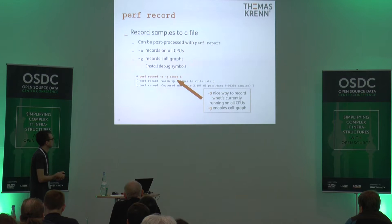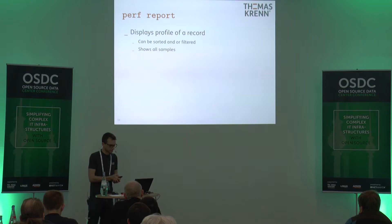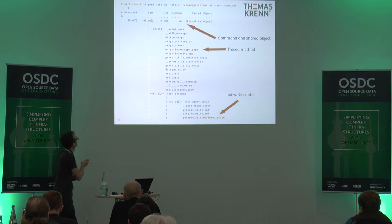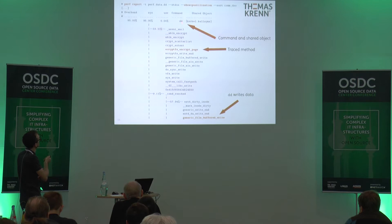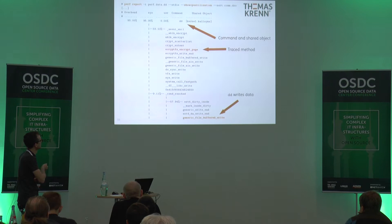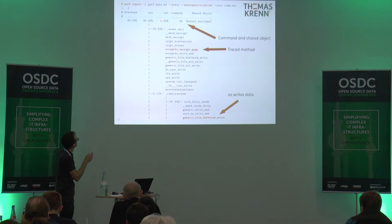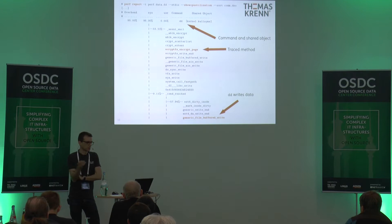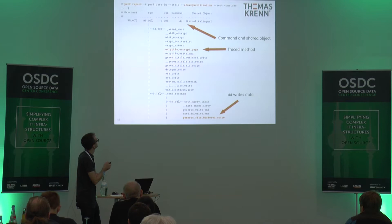You can also record samples to a file — the advantage being that you can analyze the data later on and report it afterward. In this example where we've written data to the file system, you can see eCryptFS is in use, so we're doing some encryption when writing data to the device. It seems that the eCryptFS code needs some system CPU time. I would expect that for this dd of one megabyte from /dev/zero to the block device, the data is really being encrypted.